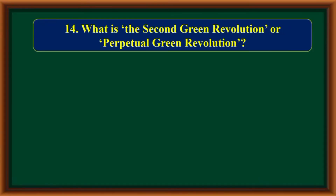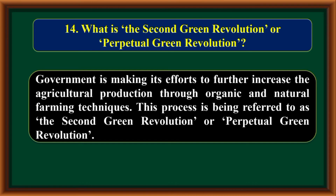What is the second green revolution or perpetual green revolution? The government is making efforts to further increase agricultural production through organic and natural farming techniques. This process is being referred to as the second green revolution or perpetual green revolution.